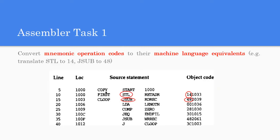The first task is converting mnemonic operation codes to their machine language equivalent. For example, STL has the equivalent opcode 14, LDA has opcode 00, and COMP has opcode 28. These are all taken from Appendix A of the textbook, which lists all instructions and their opcodes for the SIC architecture.